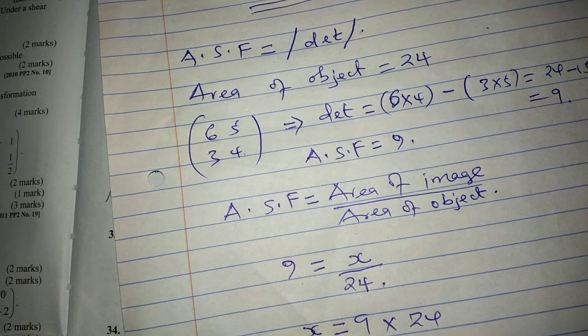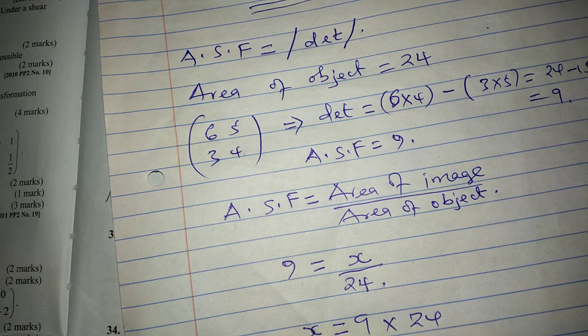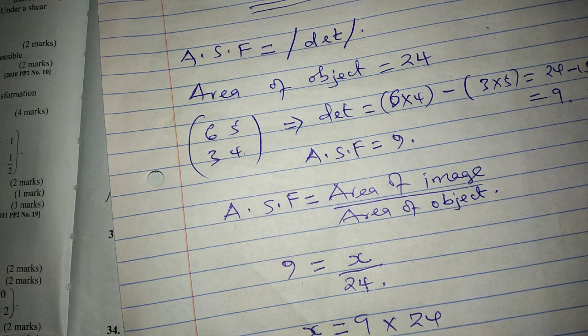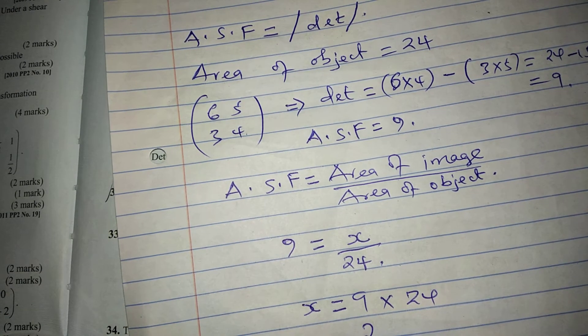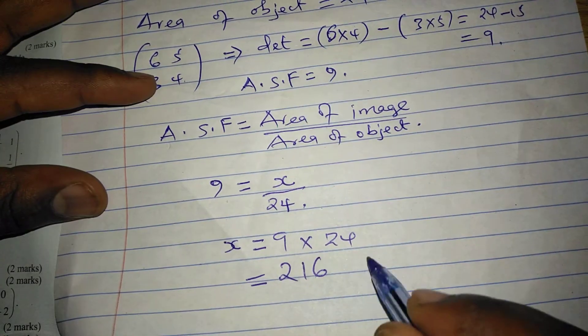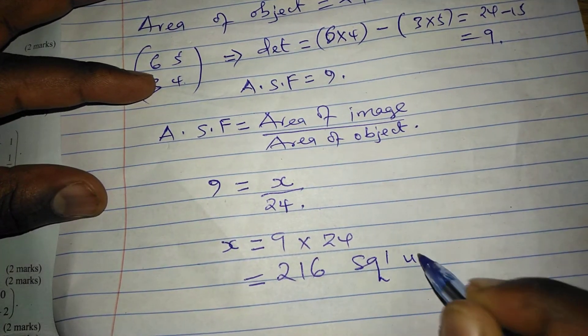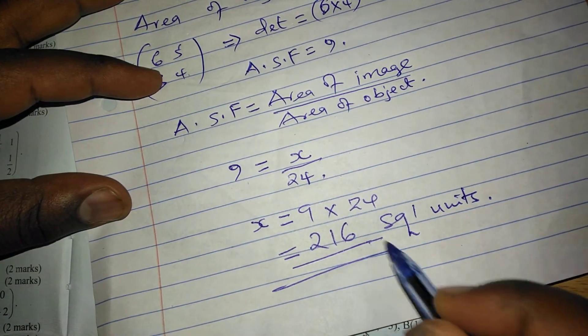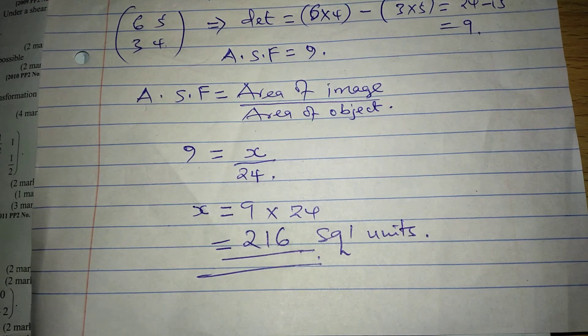And 9 times 24 is giving us 216. So 216 square units is the area of this image.